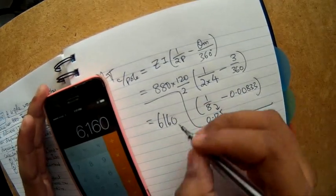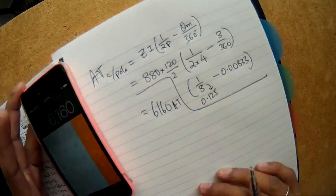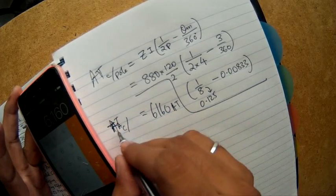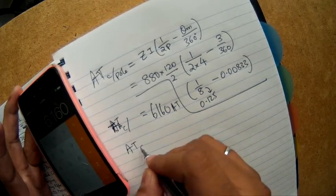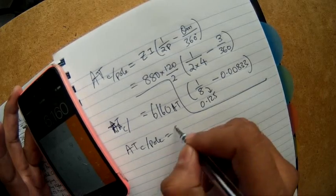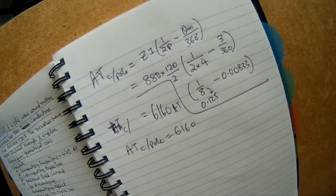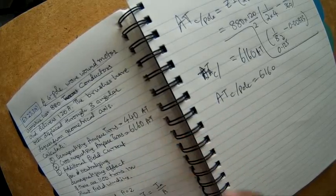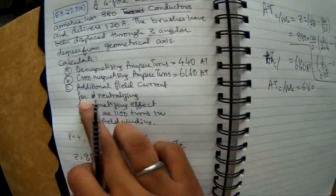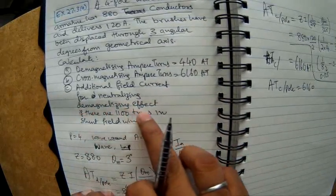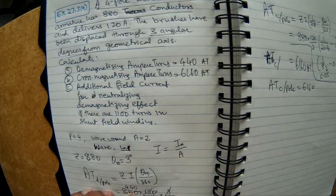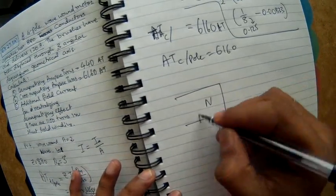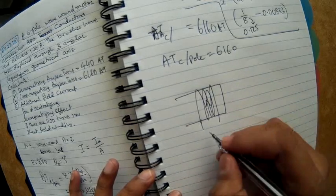So that is the calculation ampere turns. Cross magnetizing ampere turns is 6160. So this is another answer here. Now the next question is additional field current for neutralizing the demagnetizing effect.